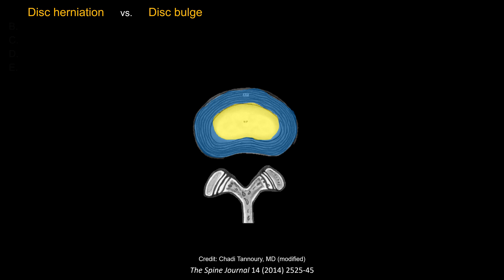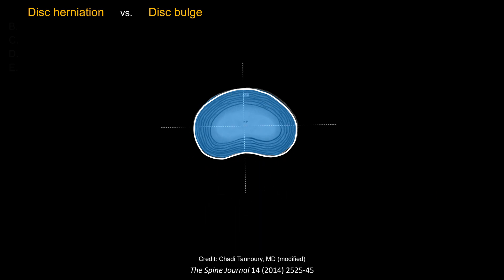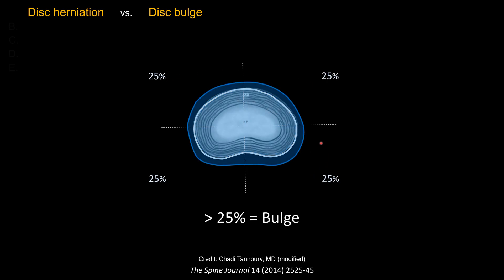The distinction between disc herniation and disc bulge is actually quite simple on paper. You take a cross-sectional image on the axial view and divide the disc into four quadrants — 25% or 90 degrees. If the disc material extends beyond the confine of the vertebral body for more than 25%, that's a disc bulge. If all four quadrants are involved, you have a symmetric or circumferential disc bulge.